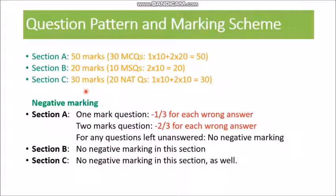The numerical answer type questions will be given two types of questions: one set of 10 questions carrying one mark each and another set of another 10 questions carrying two marks each. So this section C would be comprised of total 20 number of questions carrying 30 marks. So this is the story of 100 marks and about your 60 questions: 30 plus 10 plus 20, 60 number of questions.